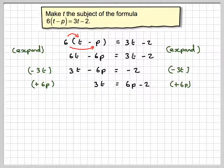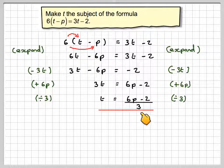obviously because we're making t the subject, is to divide by 3. So dividing both sides by 3, we get t on this side, which is equal to (6p - 2)/3.